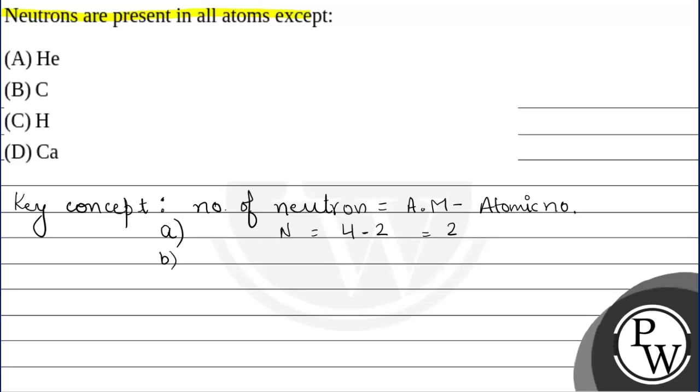But, agar hum baat karein Carbon ki (if we talk about Carbon), 12 is the atomic mass minus 6 is the atomic number. So, number of neutrons are 6.